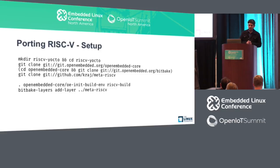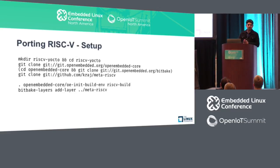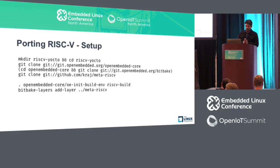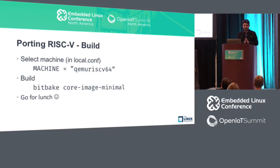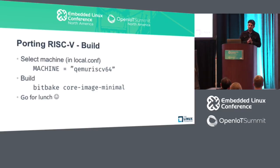The setup is minimal — it only depends upon the core layer. You just check out the core layer, then check out the RISC-V layer, set up your environment, and you're all set. After setup, you select the machine to be QEMU RISCV64 and off you go — you can start your build in just these three steps. There is only 64-bit QEMU right now; 32-bit is not yet supported. There are some gaps there — for example, glibc doesn't work yet for 32-bit.